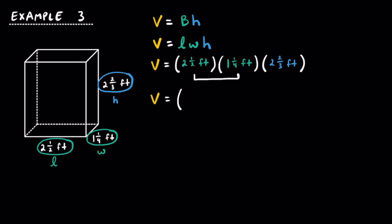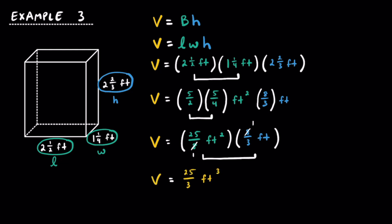Converting each of the mixed numbers into improper fractions, we really have 5 halves times 5 fourths times 8 thirds. 5 halves times 5 fourths is equal to 25 eighths, and we're going to multiply that by 8 thirds. Cross-canceling the eighths together, we get a final volume of 25 thirds cubic feet, and turning this into a mixed number, we have 8 and 1 third cubic feet.